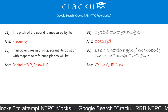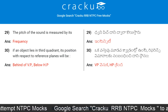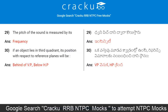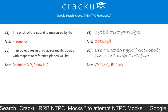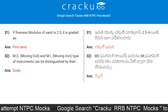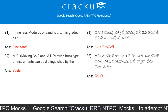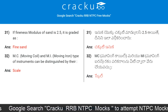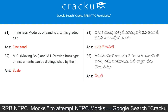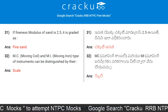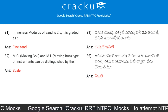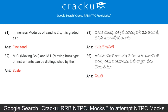If an object lies in the third quadrant, its position with respect to reference planes will be behind the VP and below HP. If the fineness modulus of sand is 2.5, it is graded as fine sand. Moving coil and moving iron type instruments can be distinguished by their scale.